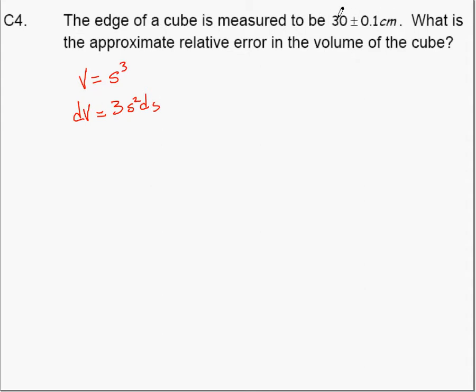Now our given information: 30 is s, plus or minus 0.1 is ds. So the error in volume is 3 times 30² multiplied by 0.1, which gives us 270 cubic centimeters as the error in the volume.